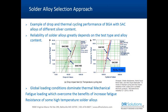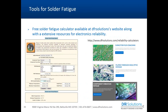You always need to optimize your solder joint selection based on the global loading condition and use environment, which dictates the failure mechanism. If designing for thermomechanical fatigue, SAC305 or SAC405 will work great. If designing for high cycle fatigue vibration, go with low silver alloy. You are also limited by the type of alloys available for your assembly process — whether wave soldering, reflow, or BGAs.